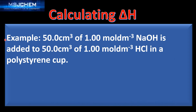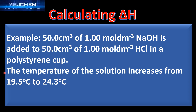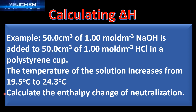Next we'll have a look at an example of calculating the enthalpy change for a reaction. In this example we have 50 cm³ of 1 mol/dm³ sodium hydroxide added to 50 cm³ of 1 mol/dm³ hydrochloric acid in a polystyrene cup. The temperature of the solution increases from 19.5°C to 24.3°C, and we're going to calculate the enthalpy change of neutralization.